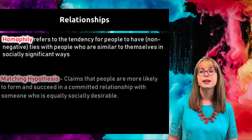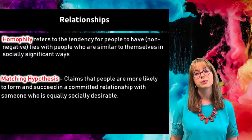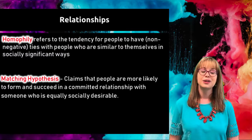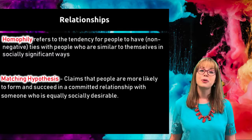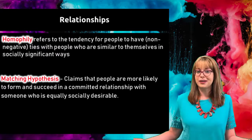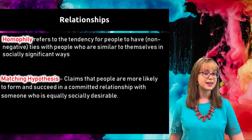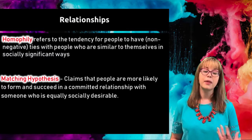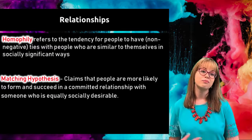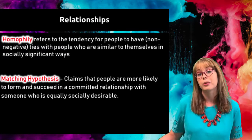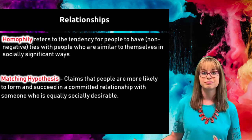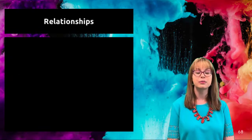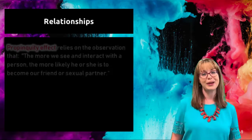The matching hypothesis claims that people are more likely to form relationships with people who are socially similar or socially desirable. For example, people who are very good looking — like Brad Pitt and Angelina Jolie — tend to get together, or people who might be very good looking or wealthy may date someone who is desirable in another way, such as being famous or having youth.